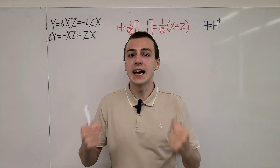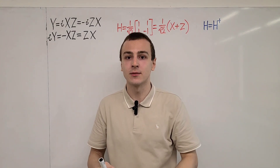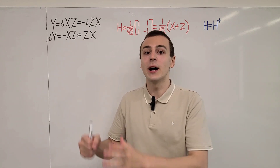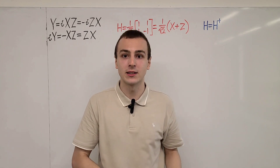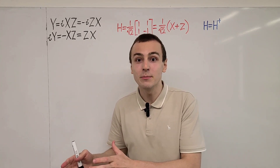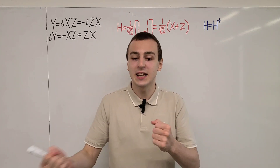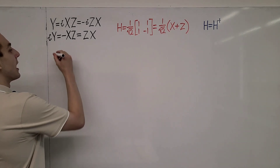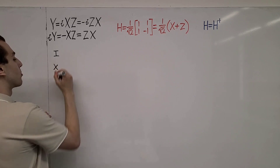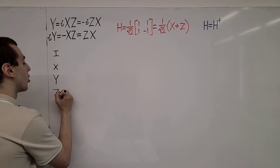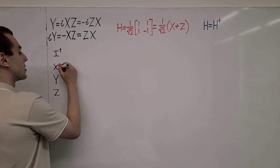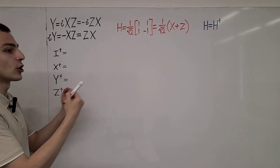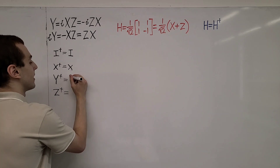Now let's look at what happens if we sandwich the Pauli matrices between two Hadamard gates. The Hadamard gate allows us to translate between the eigenbasis of the Pauli Z matrix and the eigenbasis of the Pauli X matrix — it translates the language of phase flips to the language of bit flips. Let's write down a set of interesting relationships. We have the identity operator, the Pauli X operator, the Pauli Y operator, and the Pauli Z operator. If we take the Hermitian adjoint of all of these operators, we get back the same thing — that is the definition of being a Hermitian operator.